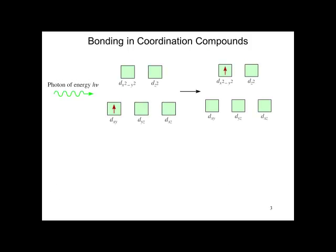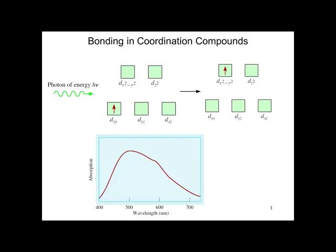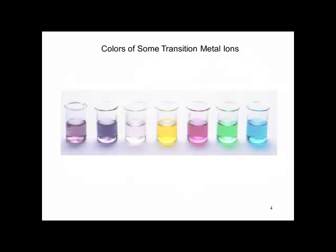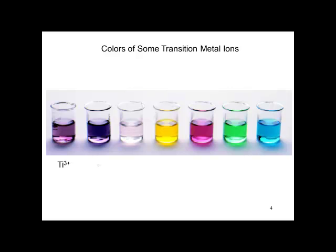If we have an electron in one of the lower d-orbitals and energy impinges on it, that energy excites the electron to an upper d-orbital. It absorbs energy, shown here, and we can actually calculate that energy difference as h-nu. The colors of these solutions of transition metal atoms or ions is shown here, and is the result of those electrons moving between the lower and upper d-orbitals.